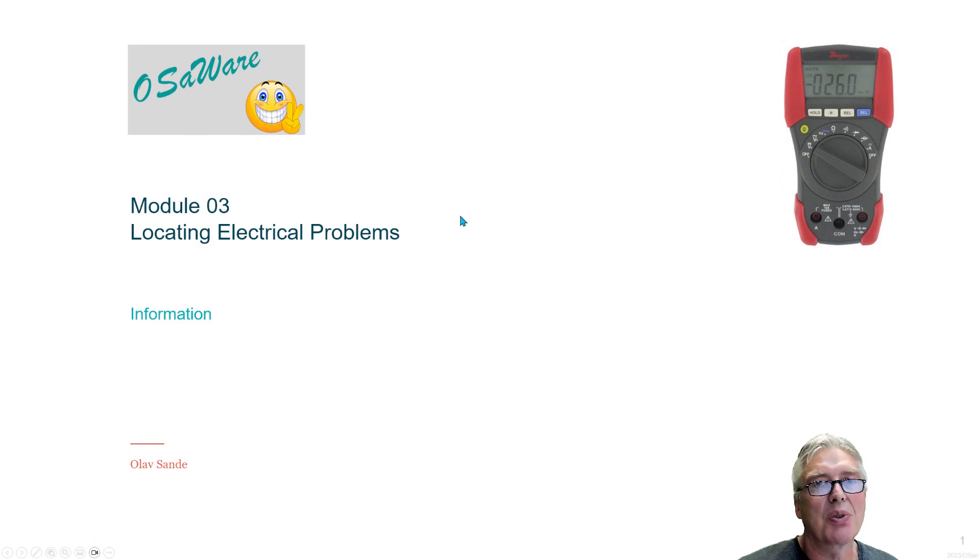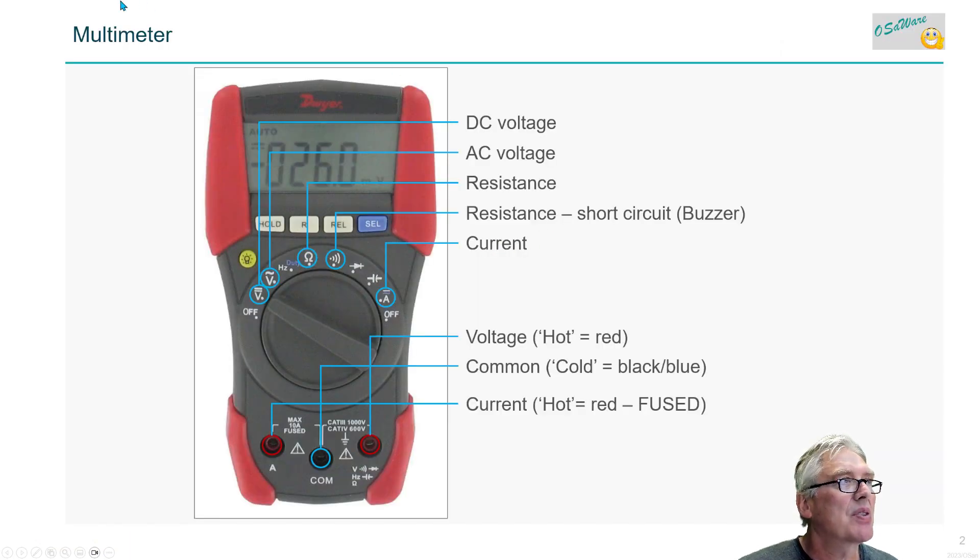This is basically about a multimeter and how to use it to locate electrical problems. A multimeter looks something like this. We have selectors here: DC voltage, AC voltage, resistance, resistance short circuits with a buzzer, and we can measure current too.